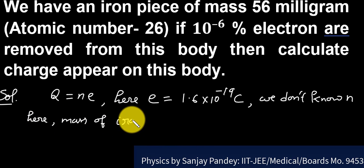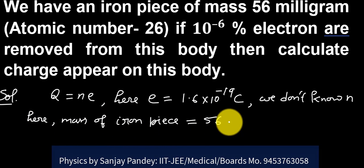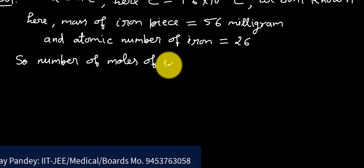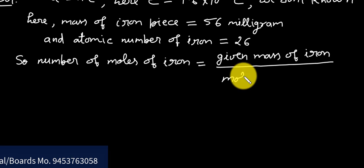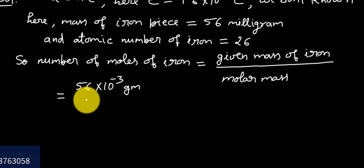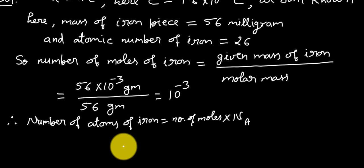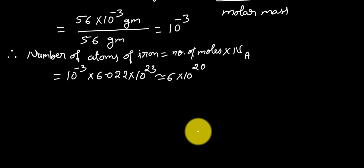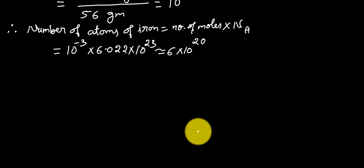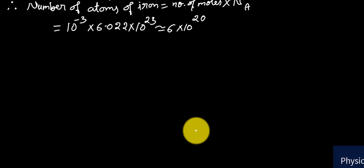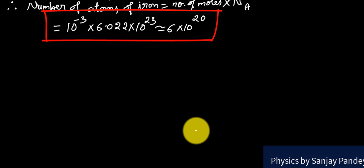It is given that mass of iron piece is 56 milligram. So, the number of moles of iron is equal to 56 × 10^-3 gram upon molar mass. That is 56 × 10^-3 gram upon 56 gram is equal to 10^-3 moles. As 1 mole of any substance is equal to Avogadro number NA. Therefore, number of atoms of iron is equal to 10^-3 × NA = 10^-3 × 6.022 × 10^23 = 6 × 10^20.